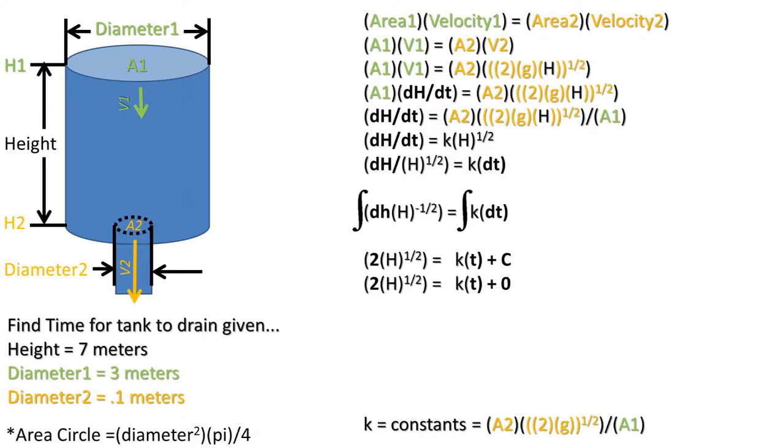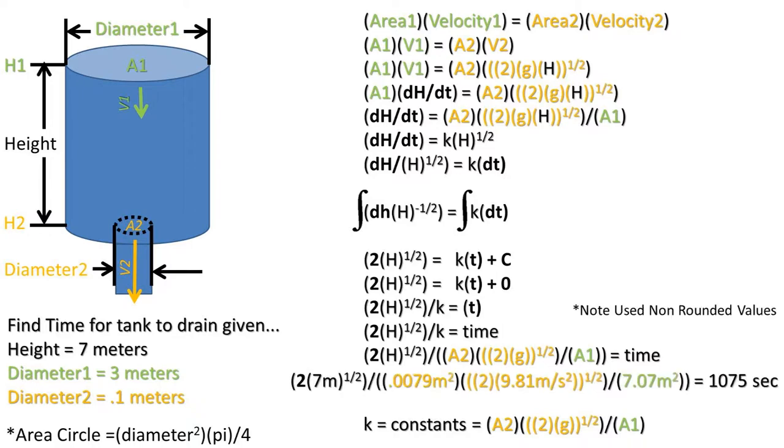We are left with 2 times the square root of h being equal to k times t plus c, which is c being the constant we add in integration. Our constant in this case will be 0. Now if we divide both sides by k, we get the equation for time for the fluid to drain from the tank. We can now plug in what our k constant value is equal to and plug in all of our values that I listed at the beginning of the problem. We get a time of 1075 seconds, which equals 17.9 minutes to drain the tank.